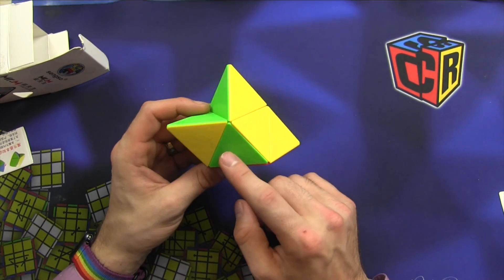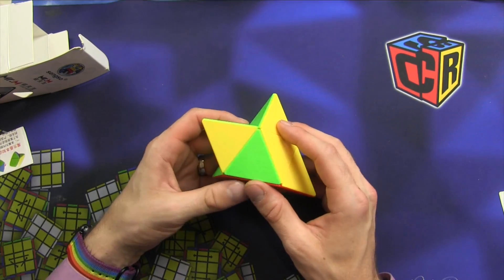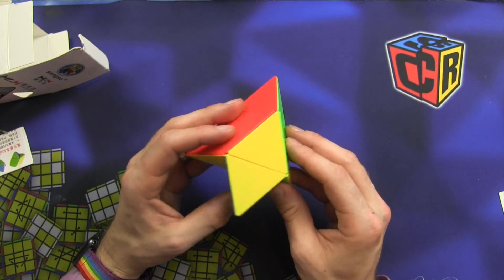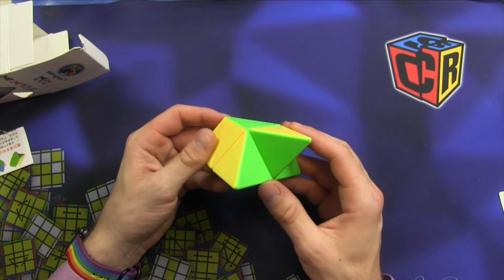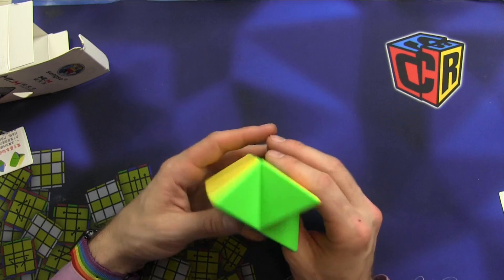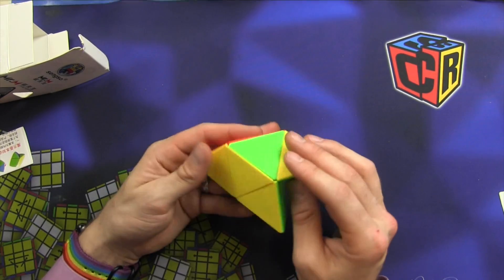We have another side, two pieces are solved, two are not, they need to be permuted. And I always do the permutation first. Now I could also just turn this and do three pieces permuted. You can swap these two by doing something like a J perm.